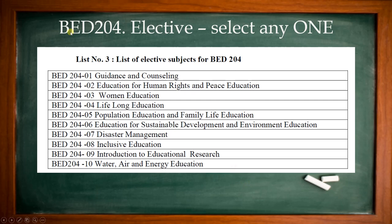Coming back to BAD 204 elective, you will have to select any one of 10 options: guidance and counselling, education for human rights and peace education, women education, lifelong education, population education and family life education, education for sustainable development and environmental education, disaster management, inclusive education, introduction to educational research, and water, air and energy education. Select any one out of these 10.